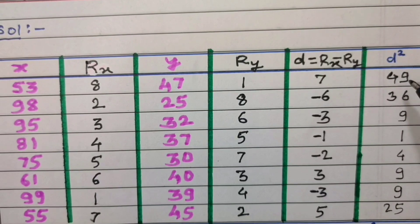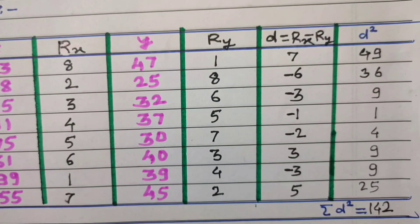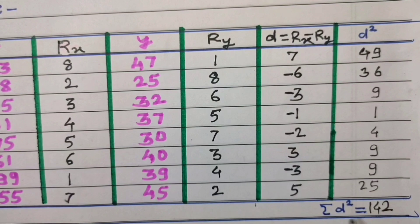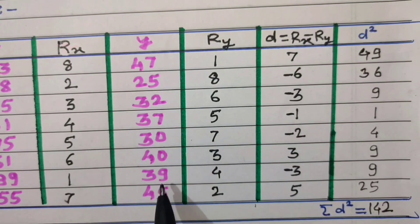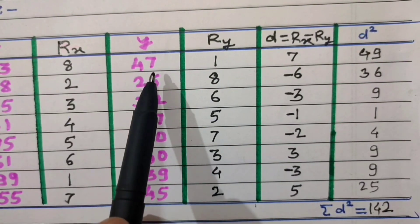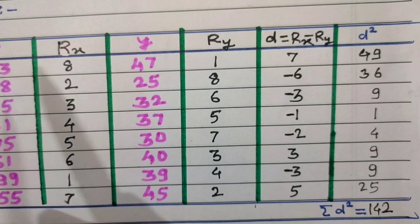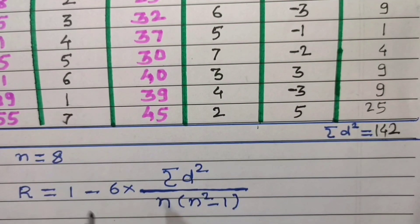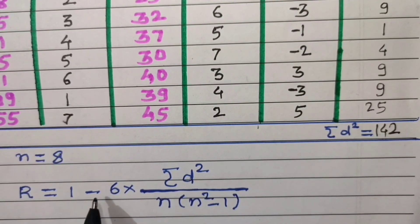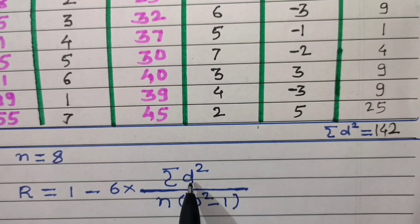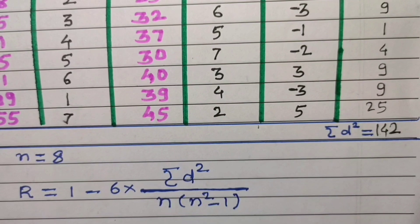The sum of all d² values gives summation d² = 142. The number of pairs of observations n = 8. Using the formula R = 1 − 6·Σd² / [n(n² − 1)], we substitute these values.